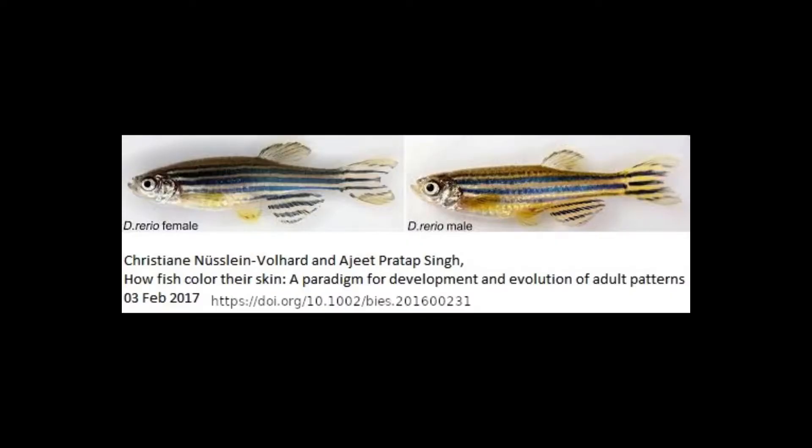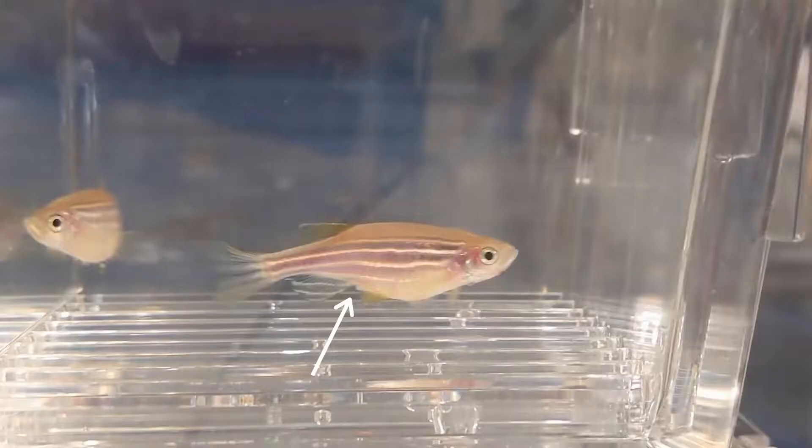When breeding zebrafish, we first have to sex them. Males tend to have a torpedo-shaped body and brighter colors, whereas females are rounder, have dull colors, and they also have this ovipositor that the arrow is pointing towards.